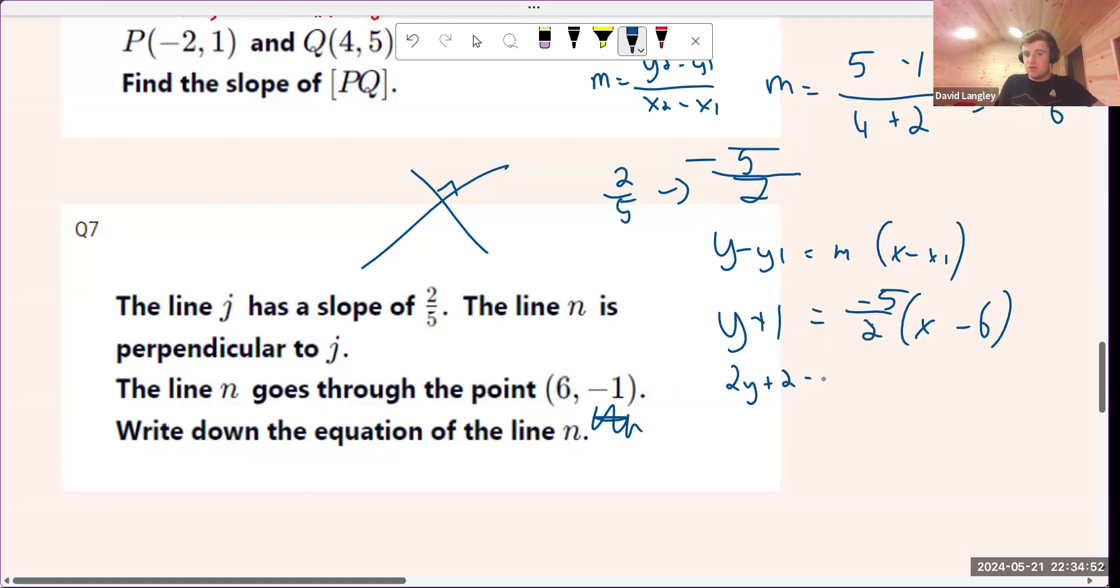I'm going to have 2y plus 2 equals, and then I'm going to multiply minus 5 in here, minus 5x plus 30. Bring everything over to the left. I'll have 5x plus 2y minus 28 equals 0. And that is our equation.